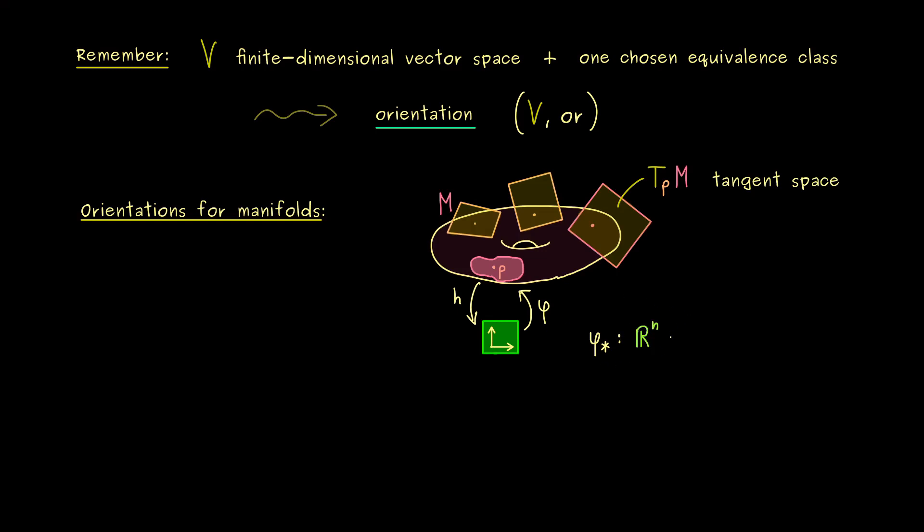So in general, we have φ* as an isomorphism between ℝⁿ and TPM. And then the canonical unit vector Eⱼ is mapped to ∂ⱼ in TPM. And here,